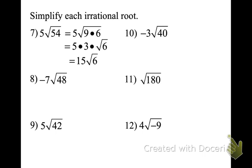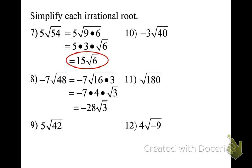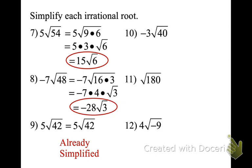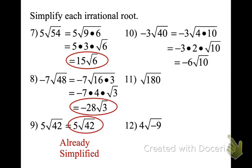Pause the recording and try the next few on your own. Let's check our work. Negative 7√48: break 48 down to 16 times 3, so that's -7 times 4 times √3, which is -28√3. For √42: we have 6 and 7, or 2 and 21. That's already simplified. Next one: -3√40 — I've got 4 times 10, so it's -3 times 2 times √10, which is -6√10.